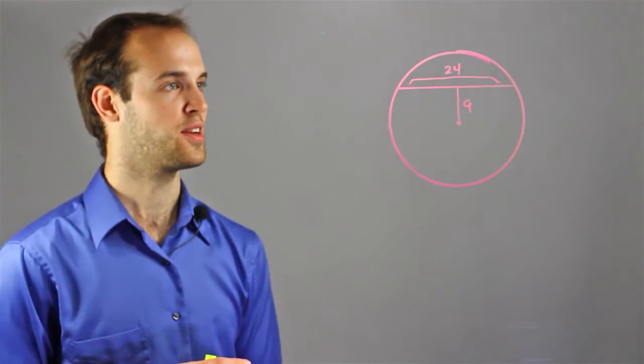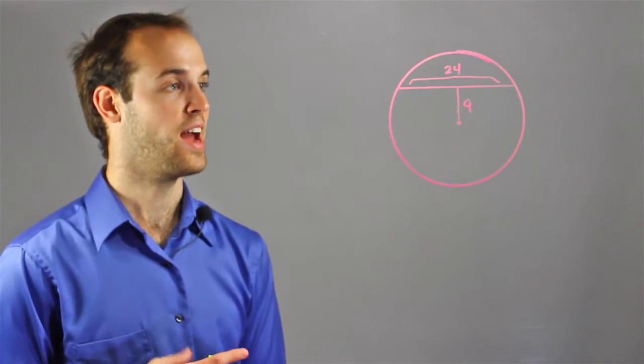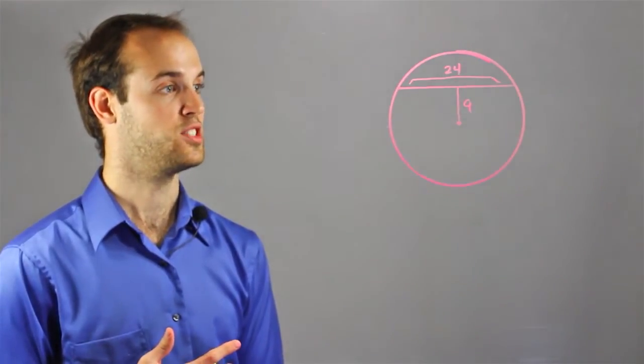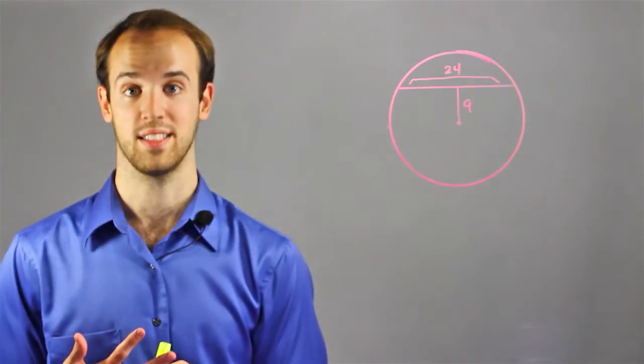Suppose I have this circle with chord 24 and I know that it is 9 units away from the center of that circle. What is the radius?